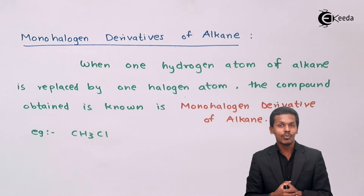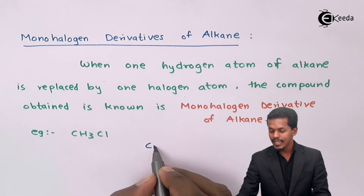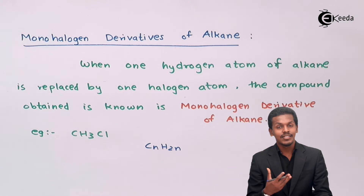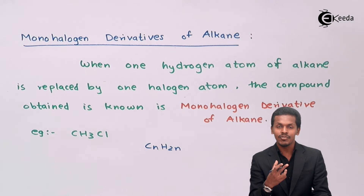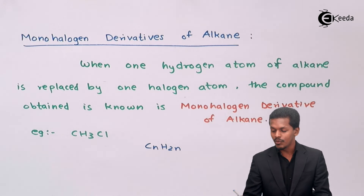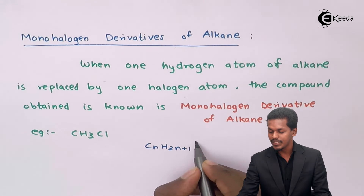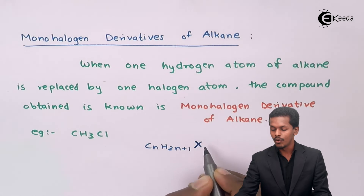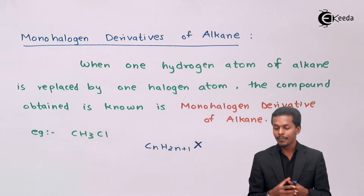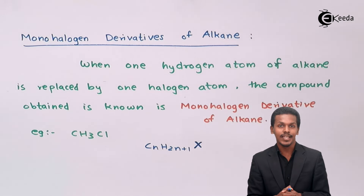Talking about the general formula of the monohalogen derivative: the general formula for an alkane is CₙH₂ₙ₊₂, but since we are replacing one hydrogen atom with one halogen atom, the general formula becomes CₙH₂ₙ₊₁X, where X represents the one halogen atom that has replaced the hydrogen.